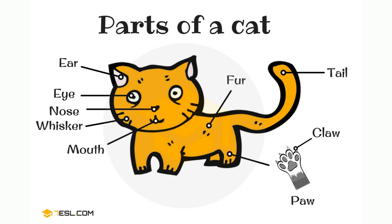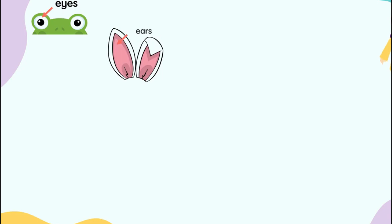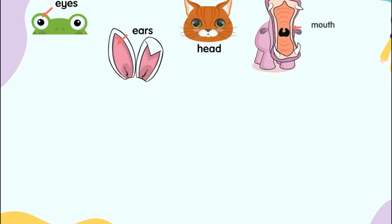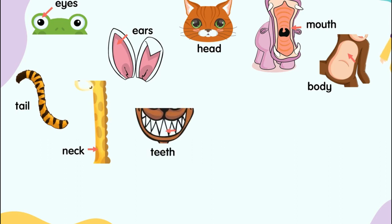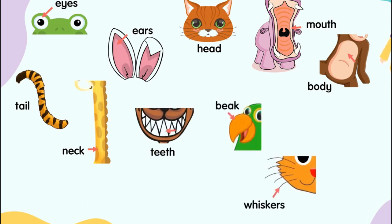In your exercise book, you can write about: eye, nose, whisker, ear, tail, eyes, ears, head, mouth, body, tail, neck, teeth, beak, whiskers, wing.